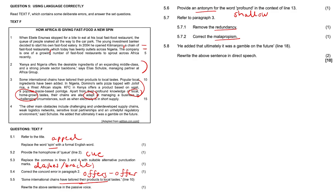And 5.8, 'He added that ultimately it was a gamble on the future.' So that's line 18, line 18 is here. Rewrite the above sentence in direct speech. So it's going to be 'he added'—you need to remove the 'that' because that's going to be indirect speech. So 'he added,' in the place of the 'that' we put a comma, open a quotation mark, capitalize the 'u.' So comma, quotation mark, capitalize the 'u,' full stop, quotation mark, quotation mark, and that's it.